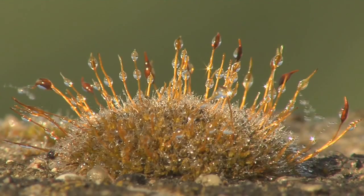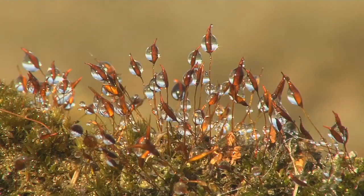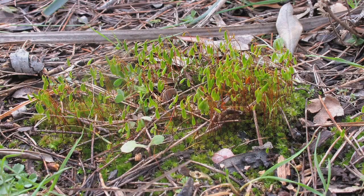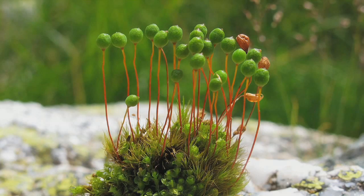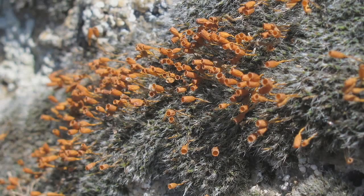Fertilised by the male cells, the female bryophyte cells develop long stems, at the end of which appear spore capsules. When these spore capsules open, they free spores the size of a few microns, which give birth to new plants.